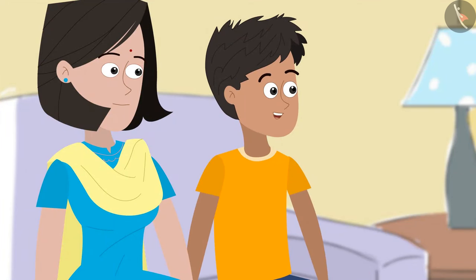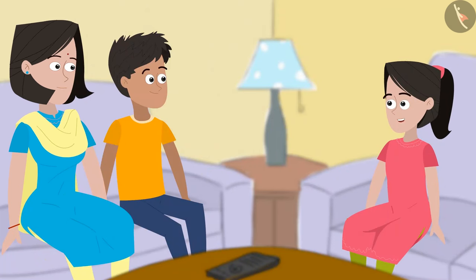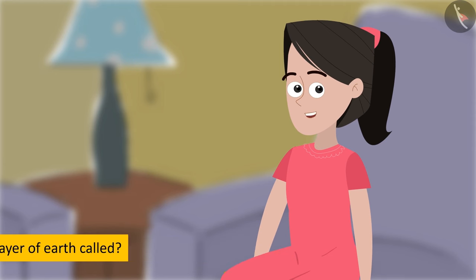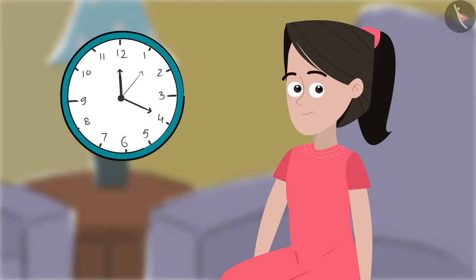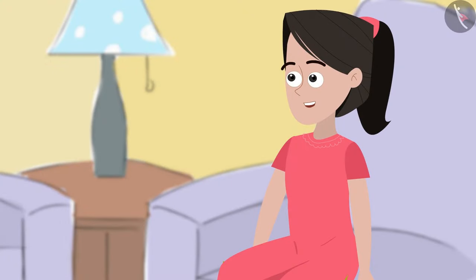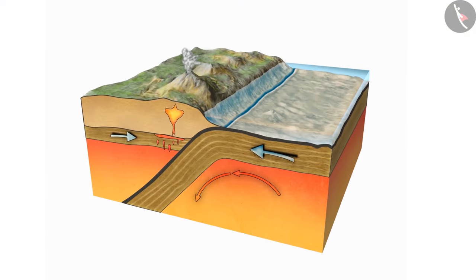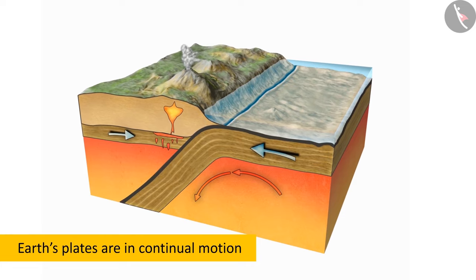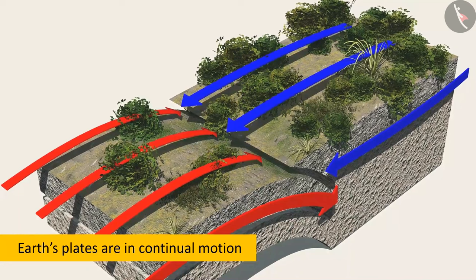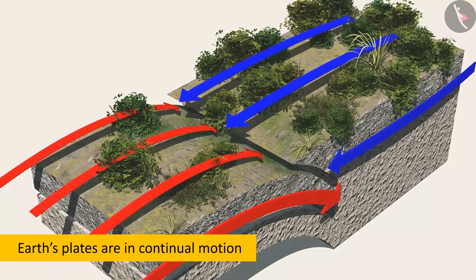Sanya, can you tell me the actual cause of earthquakes? Yes, Bhaiya. I had read that when there is any disturbance inside the depths of the uppermost layer of the Earth, earthquakes are caused. Friends, can you guess the name of this layer? The uppermost layer of the Earth is made up of some plates that are in continual motion. When these plates move, they collide with one other or rub against one another, which is felt as a jolt or tremor on the surface of the Earth.